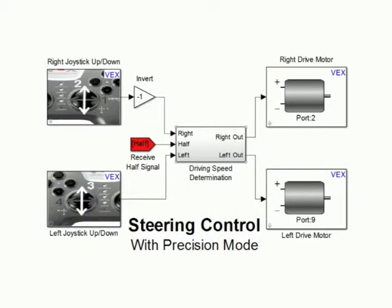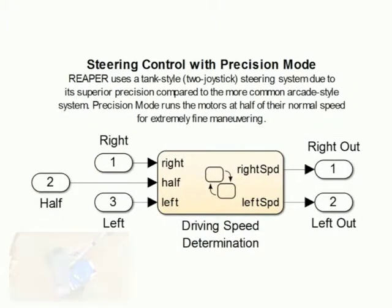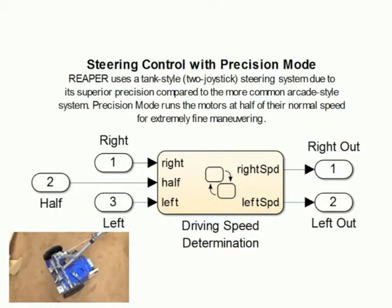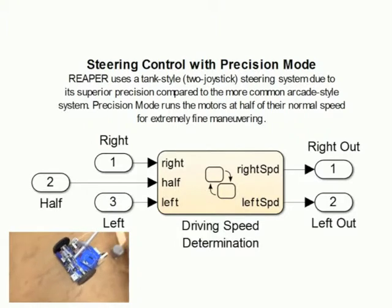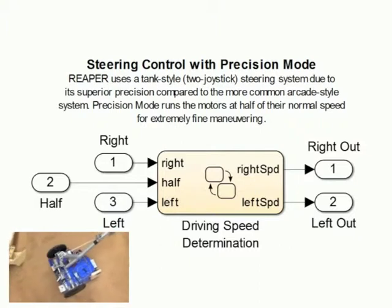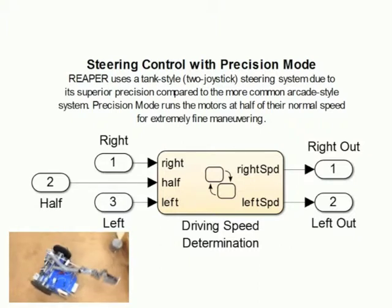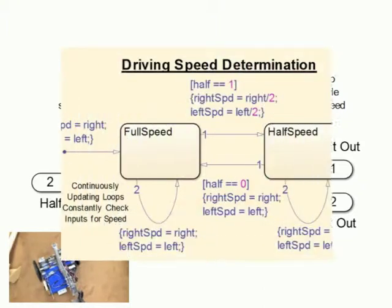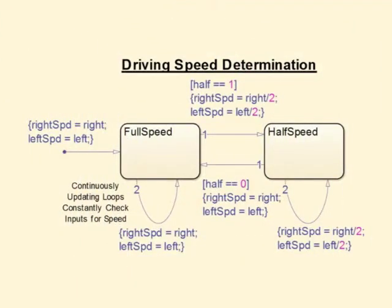Reaper uses both of the controller's joysticks for its tank-style steering system. This provides better maneuverability than the single joystick arcade style. The system also includes precision mode, which halves the running speed of the motors for situations where very precise steering is necessary. Speed is determined in real time by this simple logic.